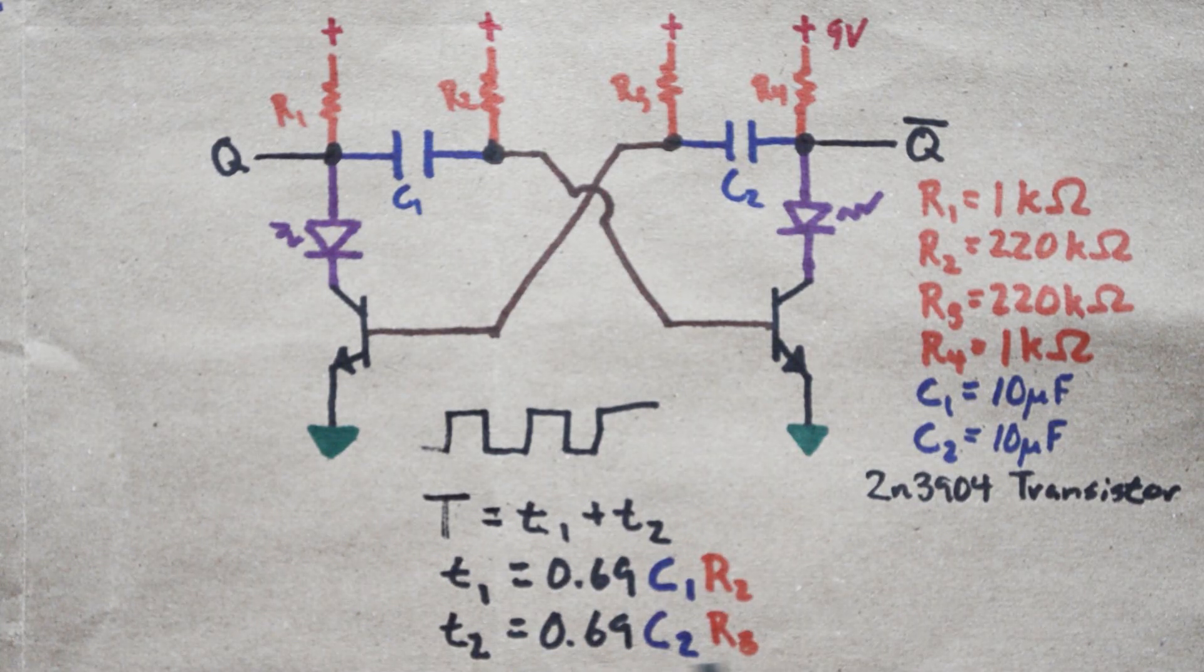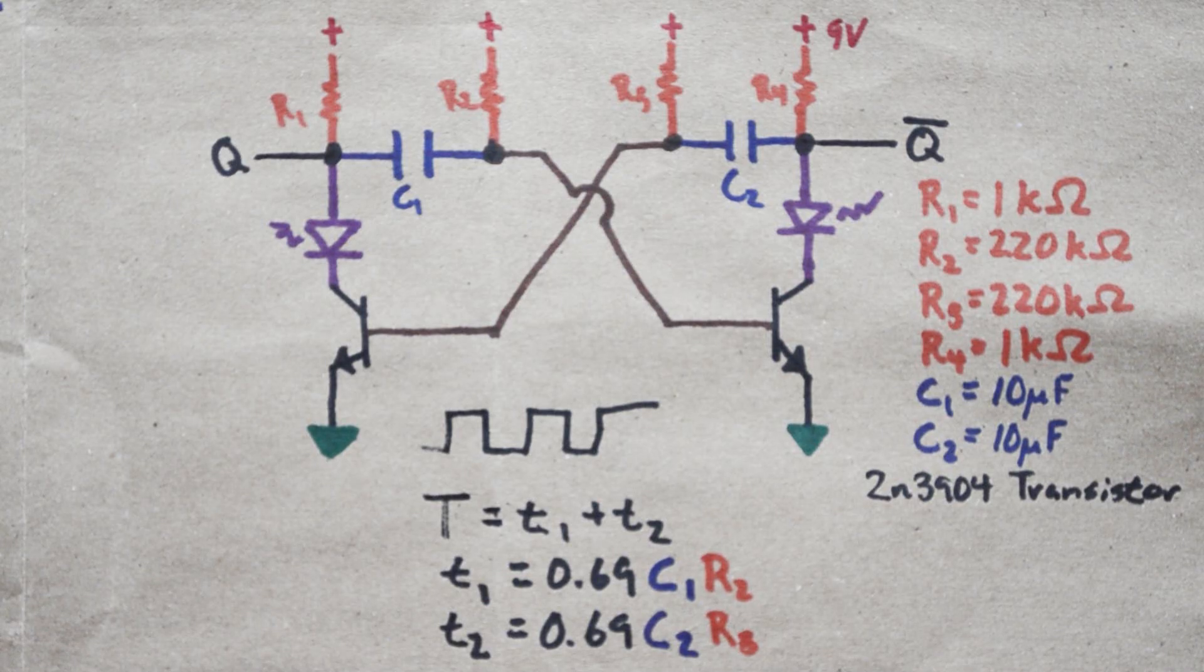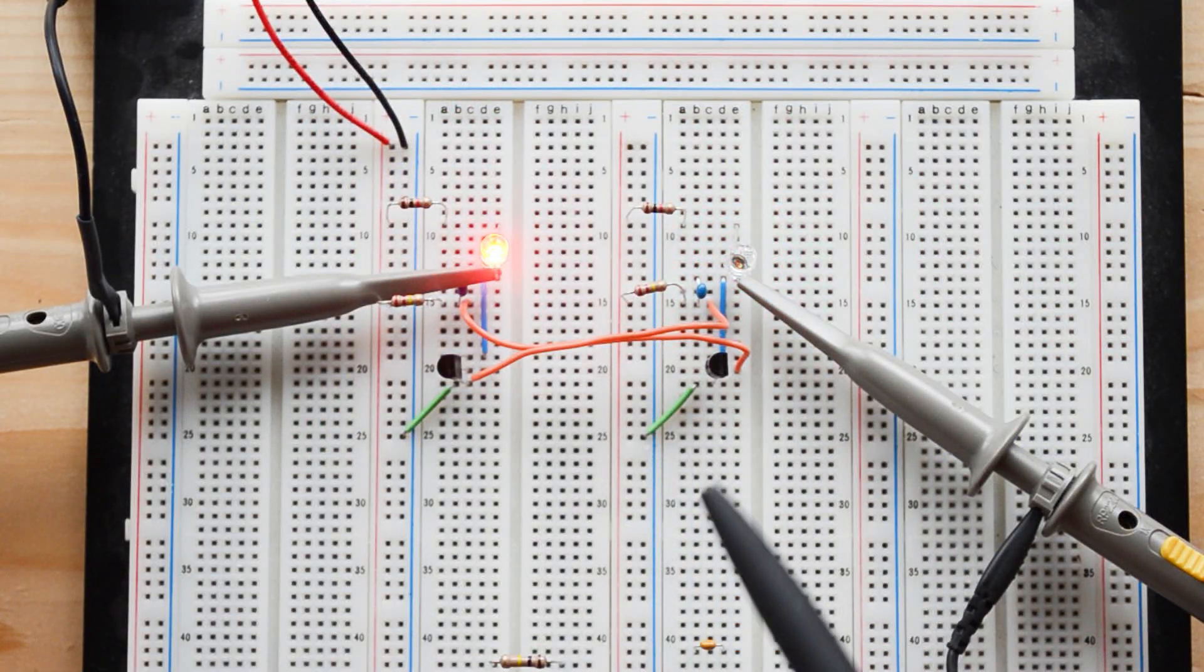Likewise we can do the same thing over here at T2 with C2 and R3, and by adjusting those we can adjust the duty cycle and we can adjust the frequency of which things are occurring. So let's take a look at that. So I've not changed this setup since last time.